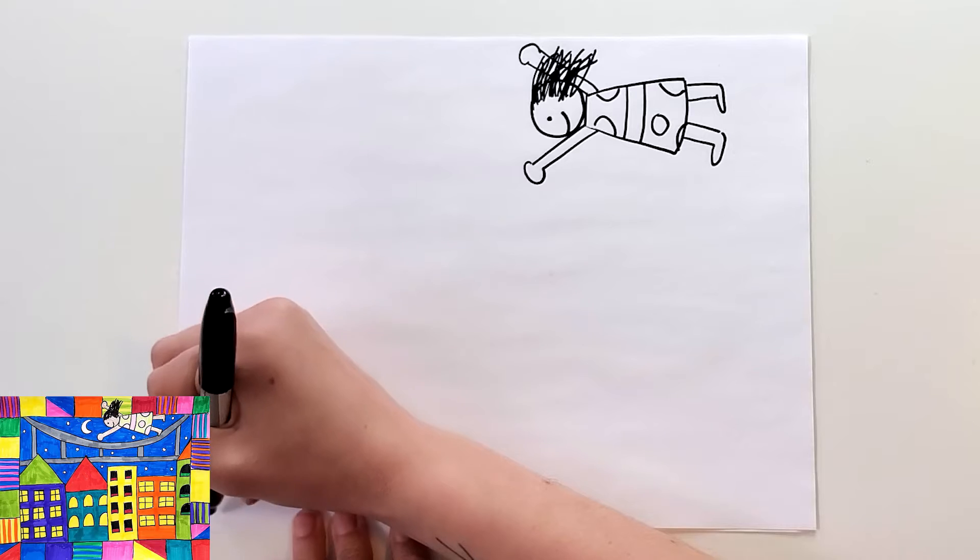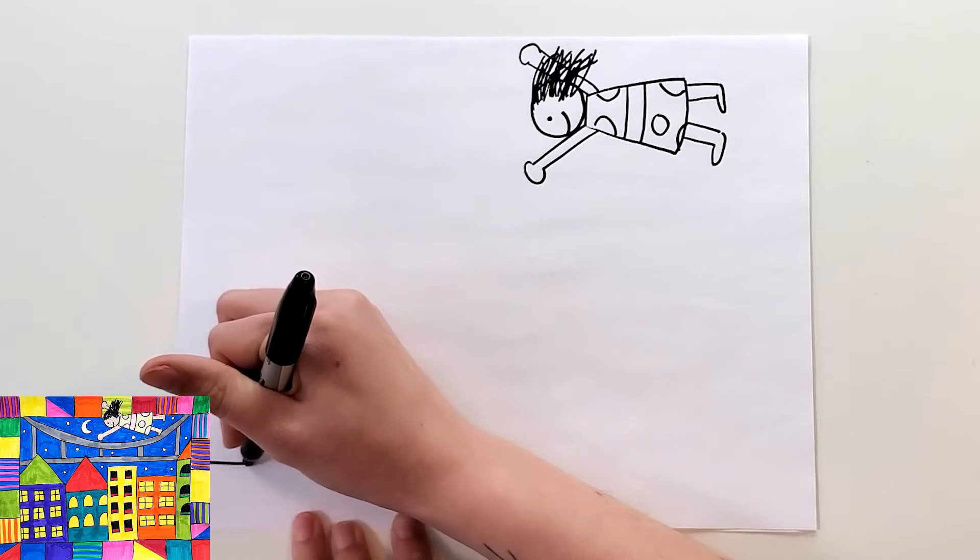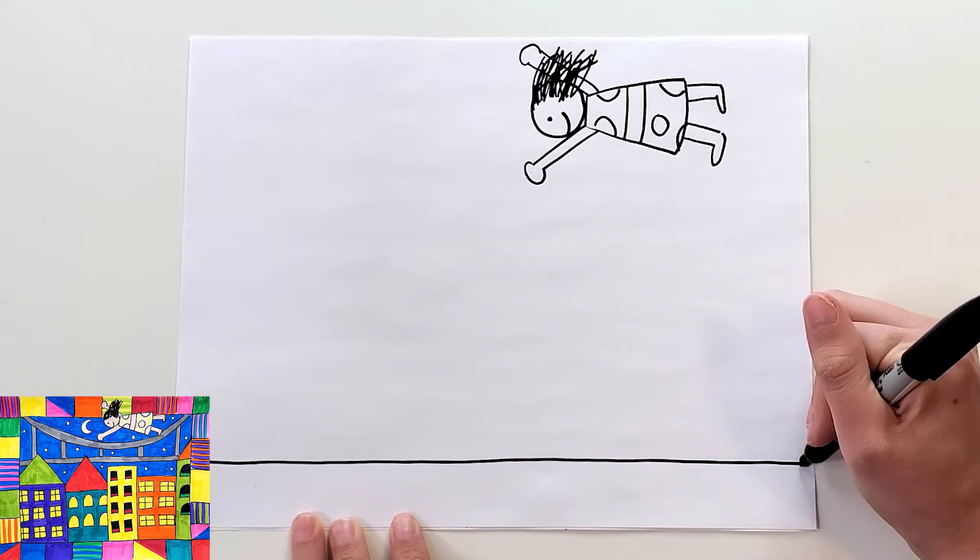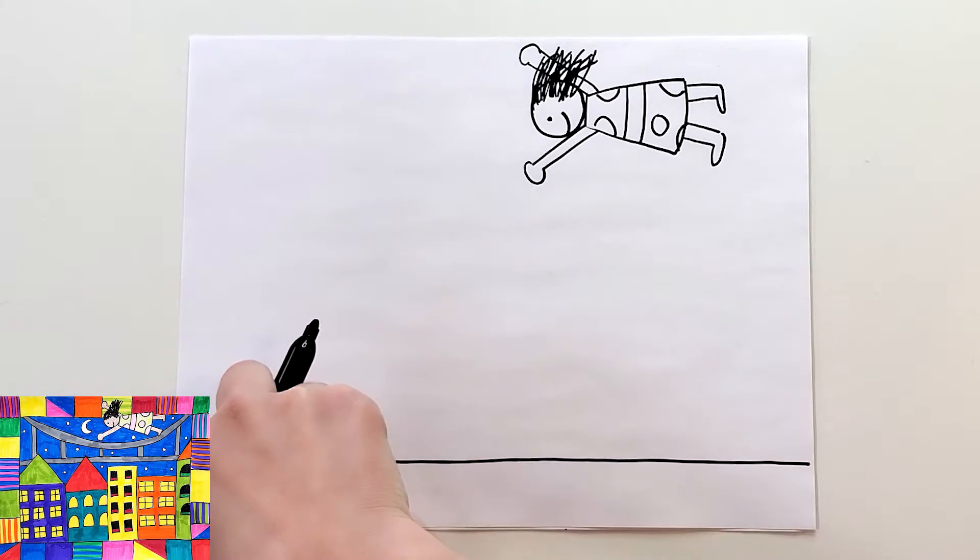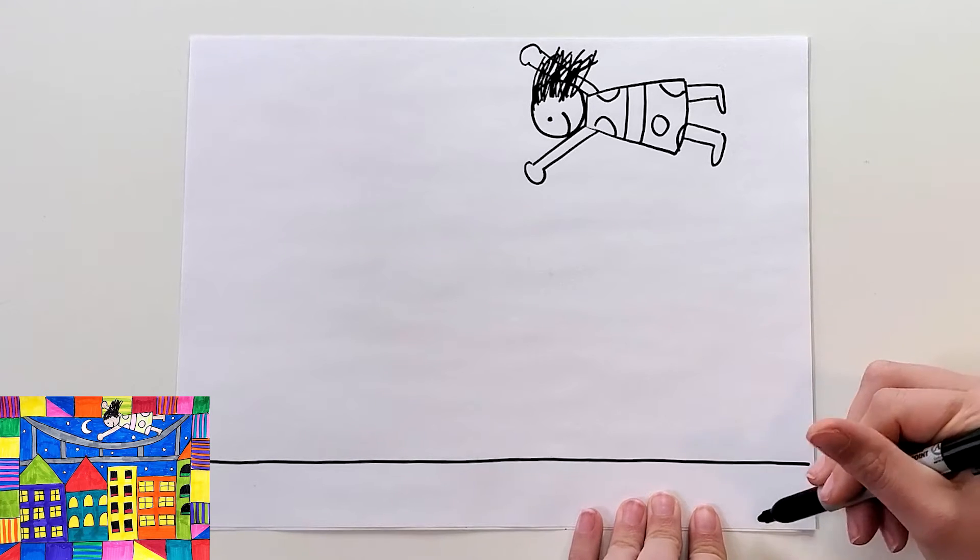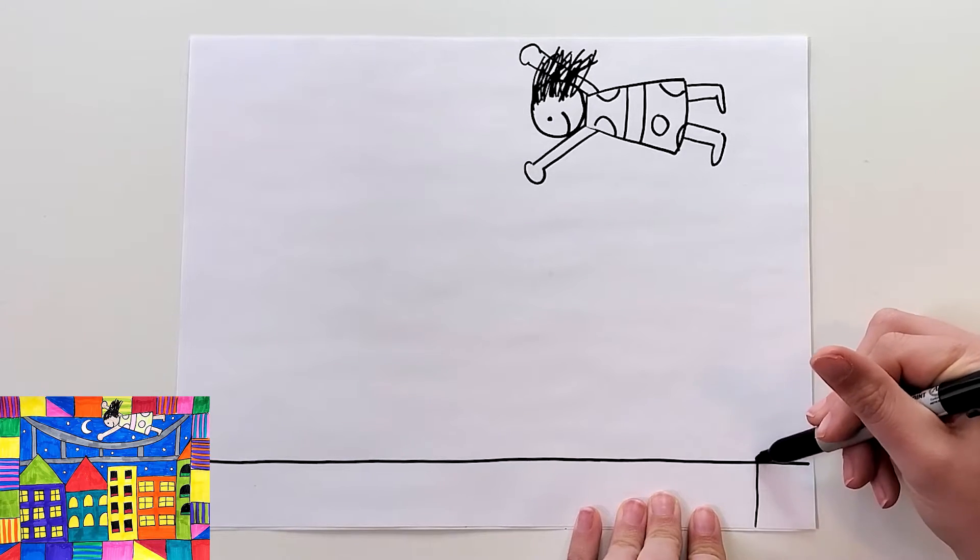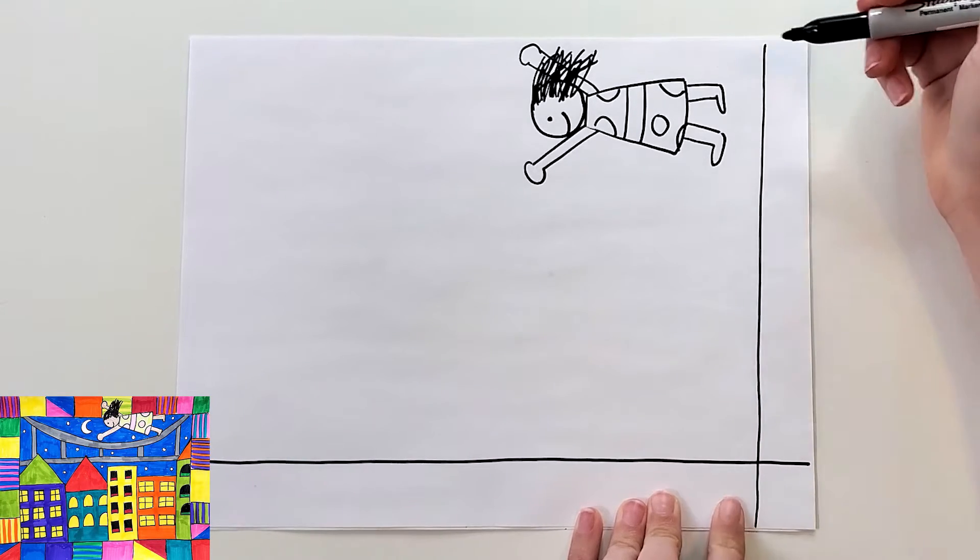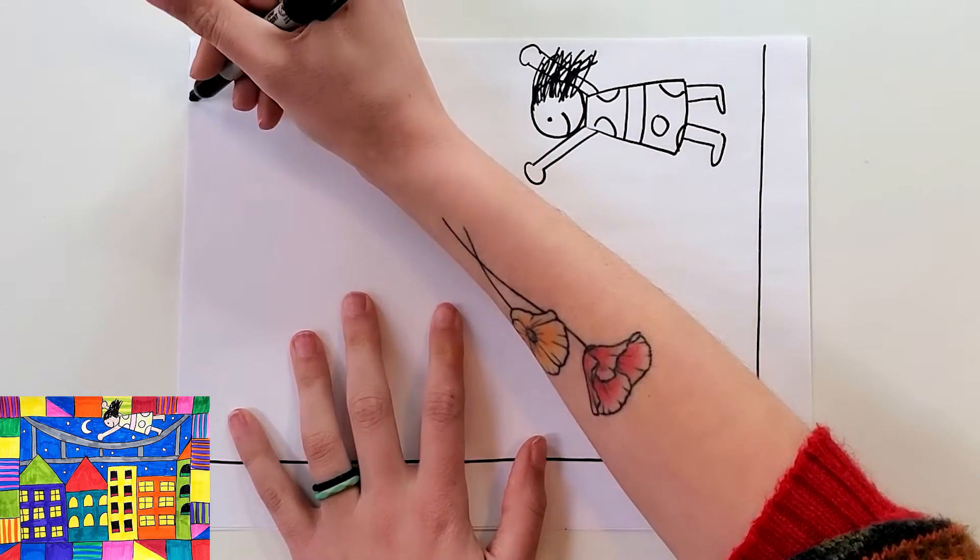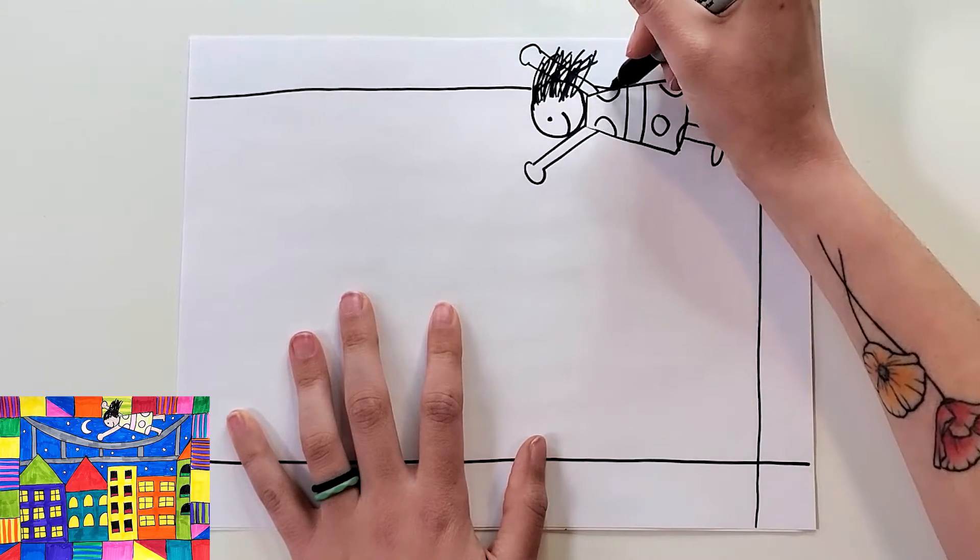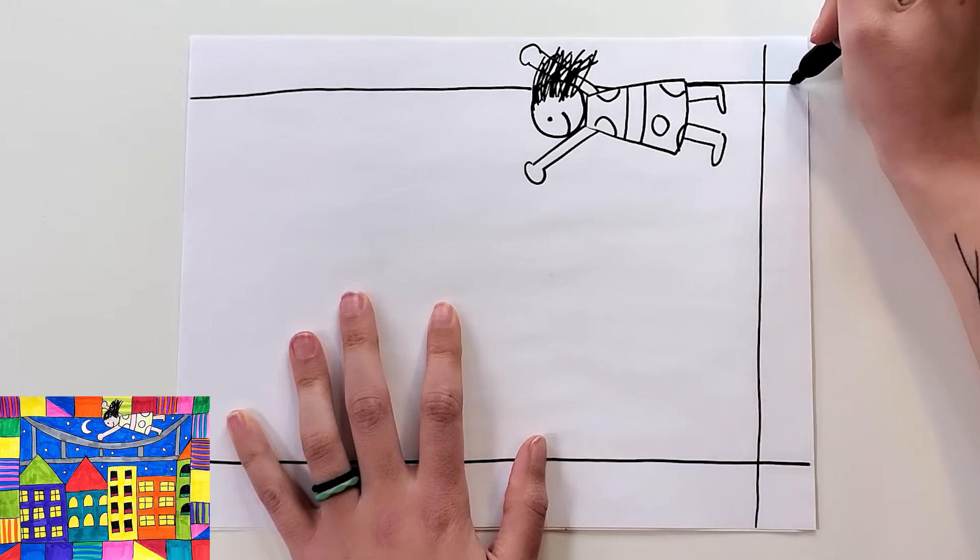So I'm going to start about an inch from the bottom here and all the way on the side and I'm going to very carefully and very slowly draw a line all the way across. Trying to make sure that the amount of space between the line and the bottom is about the same all the way. Then on the side I'm going to do the same thing. Start about an inch over. Very carefully, very slowly, draw a line all the way up. Then I'm going to do the same thing on the top. When I get to my person I'm going to just stop and continue out wherever there's space.